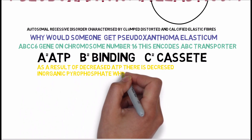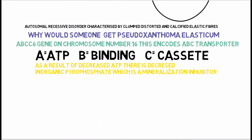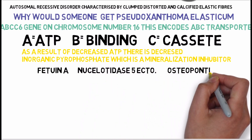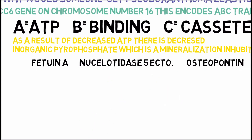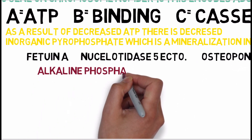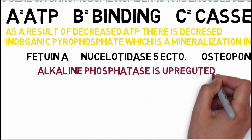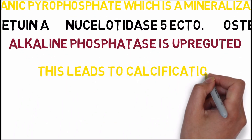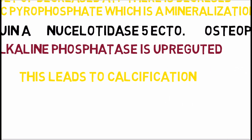When ATP decreases, inorganic pyrophosphate in the blood decreases, and we know that decreased phosphate is a signal for the body to increase mineralization. In addition, other mineralization inhibitors such as fetuin-A, nucleotidase 5, and osteopontin are also deficient in the blood of patients with pseudoxanthoma elasticum. However, mineralization upregulators such as alkaline phosphatase are increased. This leads to increased calcification. In one word, the pathogenesis of pseudoxanthoma elasticum could be explained as abnormal mineralization.